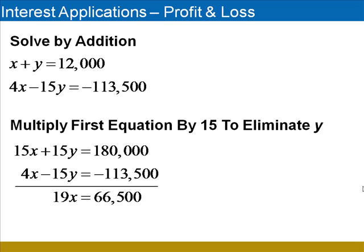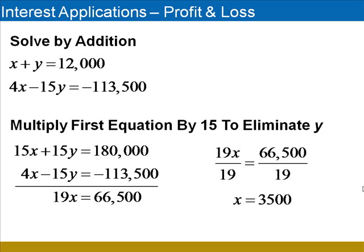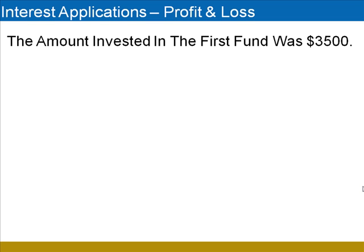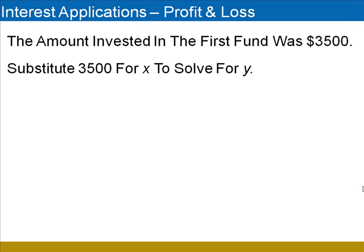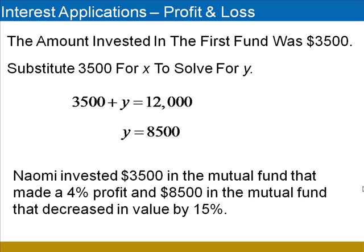This can be solved by dividing both sides by 19, and we find that X is equal to 3,500. Now that we've found how much Naomi invested in the first fund, it's time to move on to the second fund. Substitute 3,500 for X and solve for Y in the first equation of our system. Solving for Y, we get 8,500. So Naomi invested $3,500 in the first mutual fund and $8,500 in the second mutual fund.